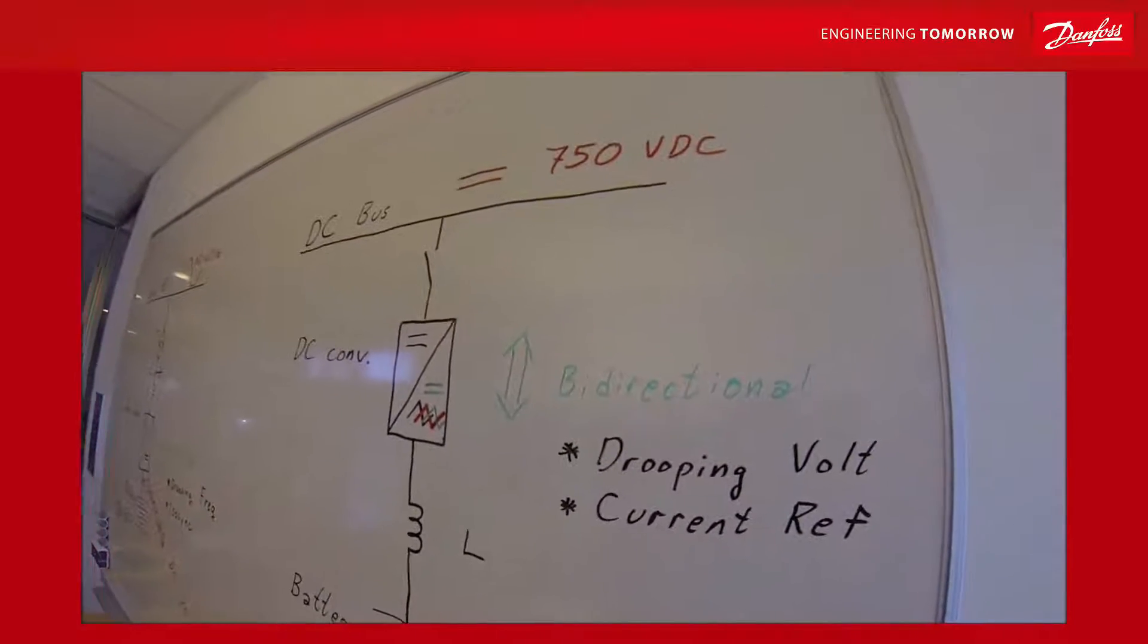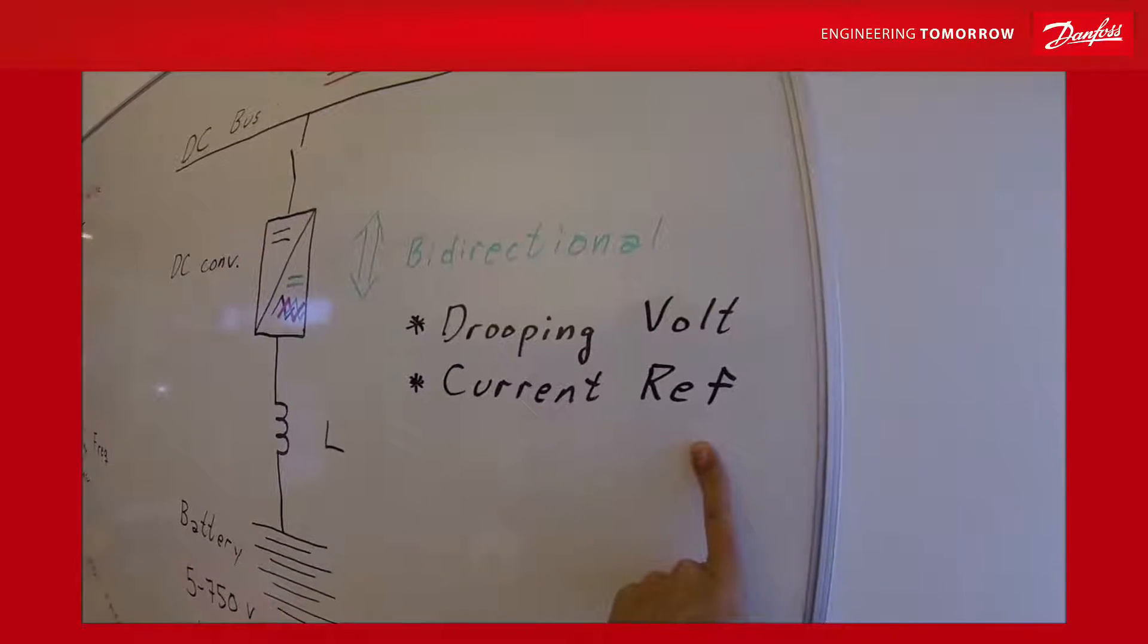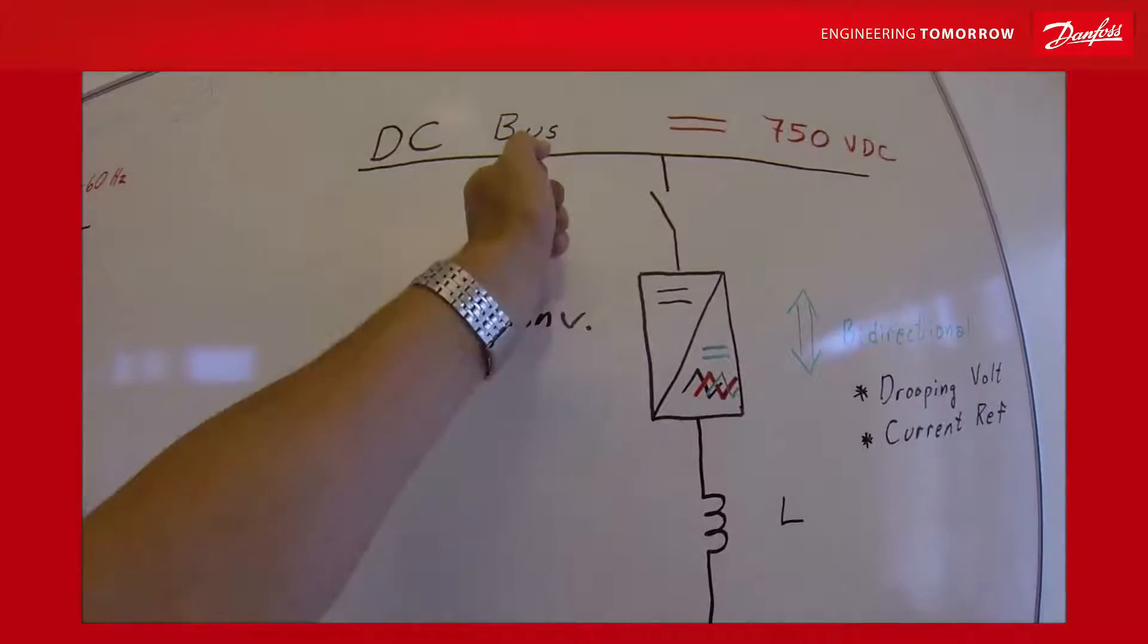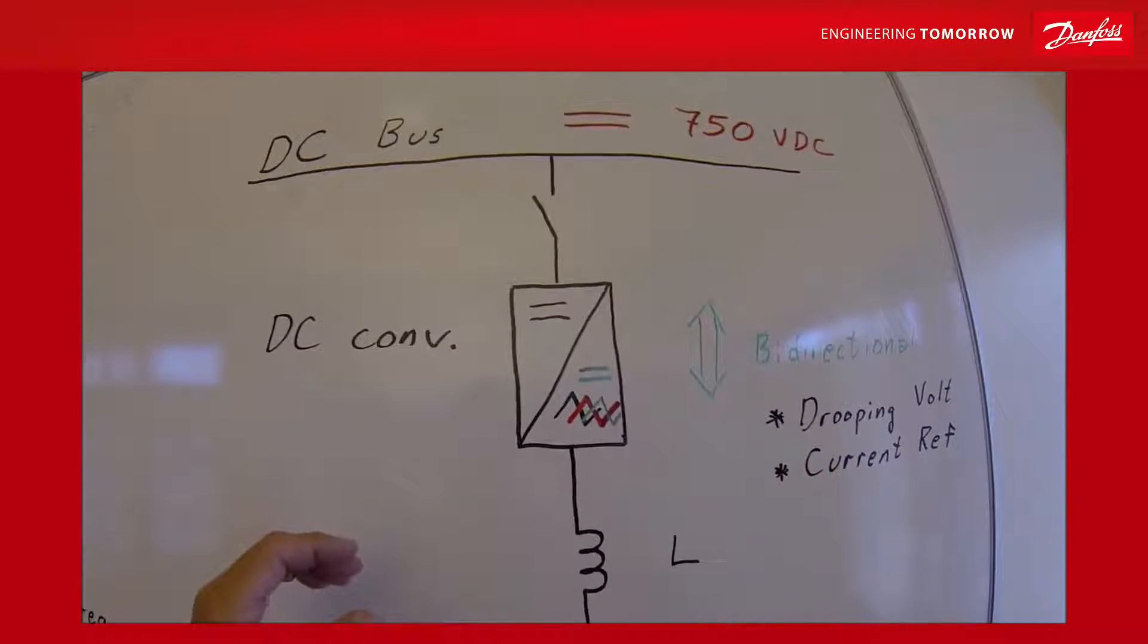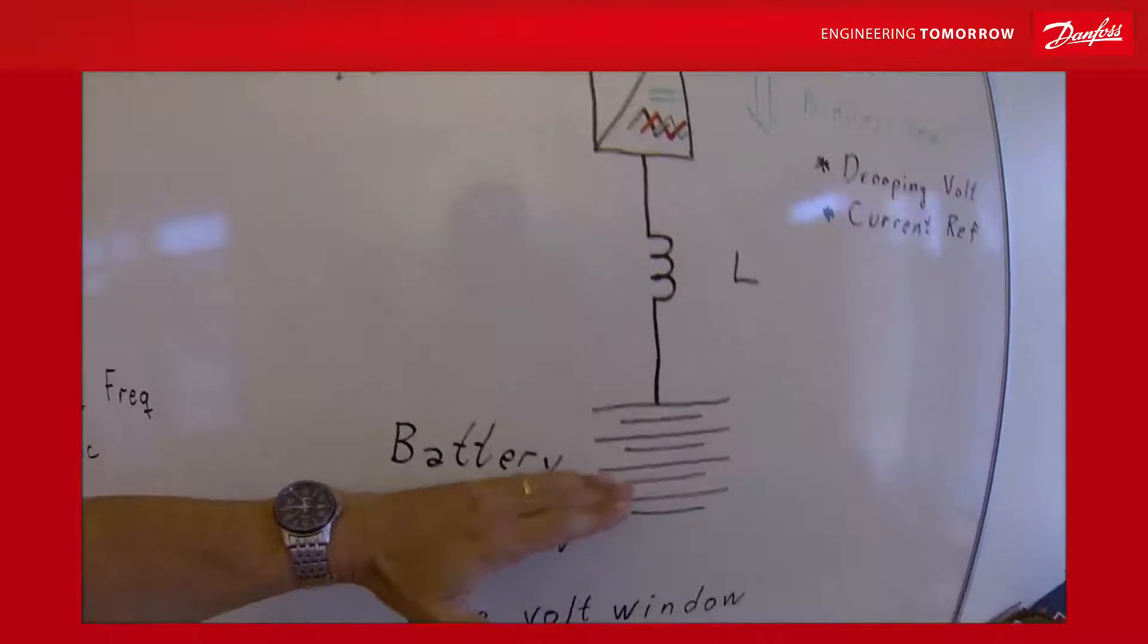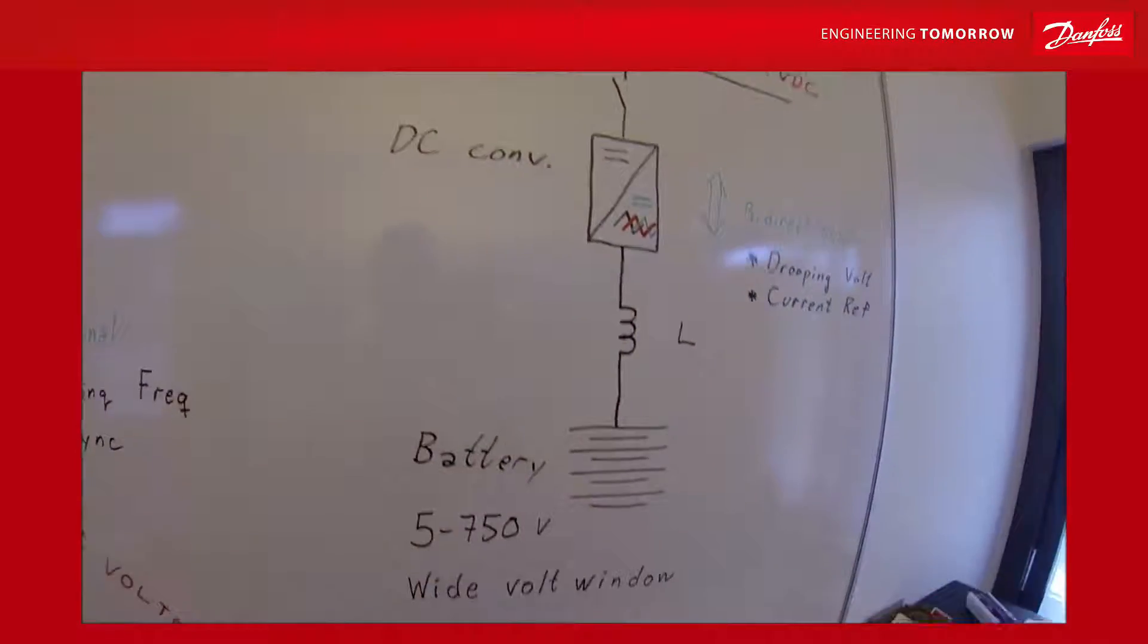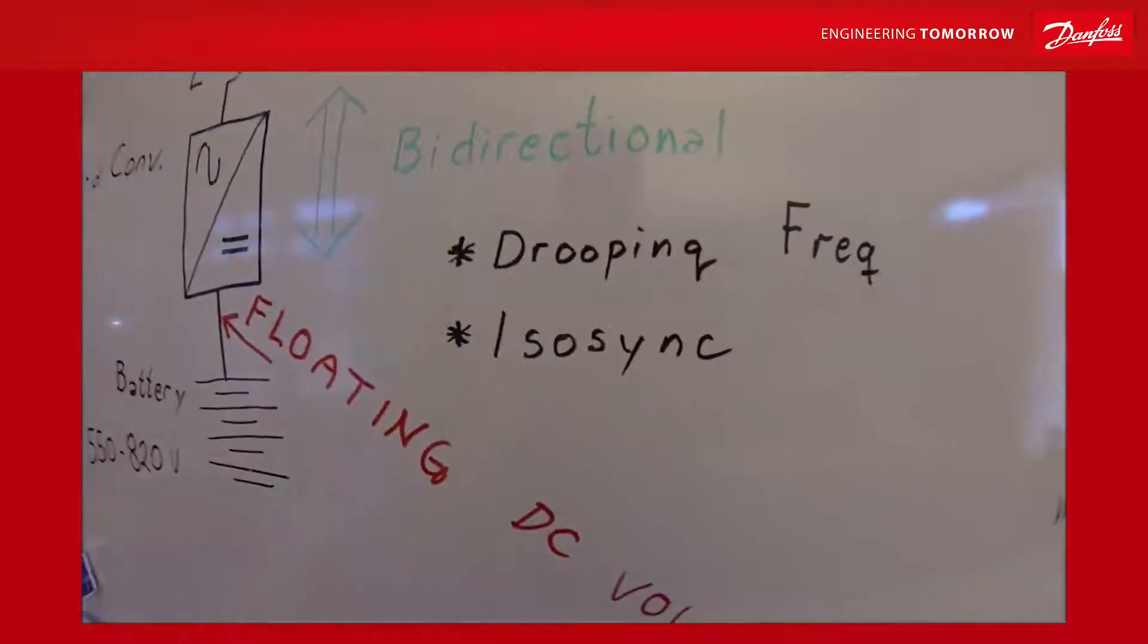Current reference is another way of controlling the DC DC converter. That is basically how like a power handle you control it from the PLC power management system, battery management system, and the operator decides how many amperes and which direction it should be. Should you give amperes to the bus or should you charge the batteries with a current coming from the DC bus to the battery? So in current reference mode it looks very similar to the grid converter in iso-synchronous mode.